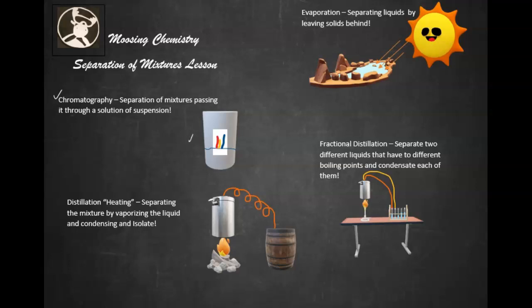The second one is distillation, separating the mixture by vaporizing the liquid and condensing and isolating. You heat a kettle full of the liquid, you have a condensing coil here, and then it goes down into the barrel and isolates it.